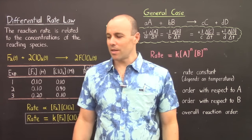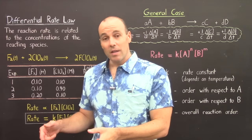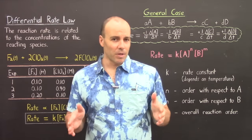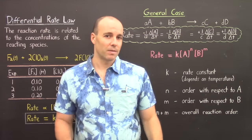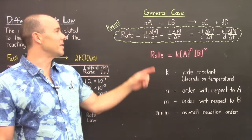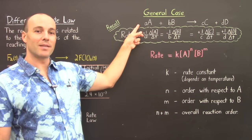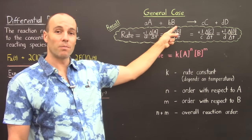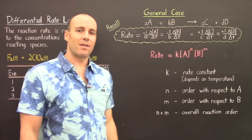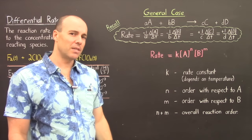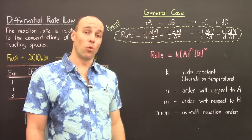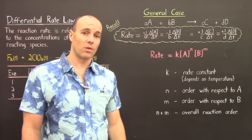We studied a specific reaction, and then we formulated the general case. Here's that generic reaction we see so often: reactants A and B form products C and D. In this reaction there are four species — A, B, C, and D — therefore four rates that we can describe.